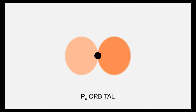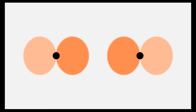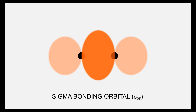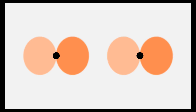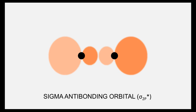Now we also mentioned p valence orbitals. They can add constructively and destructively as well. We can do this end to end, with the greatest electron density resulting between the nuclei, and this forms sigma bonding and anti-bonding molecular orbitals.